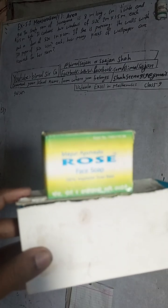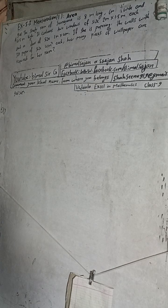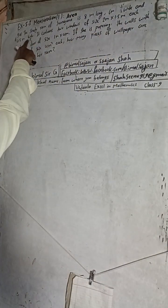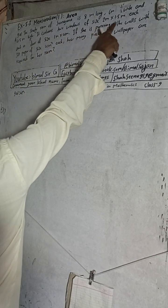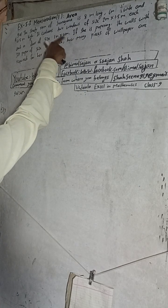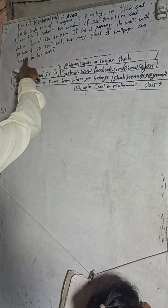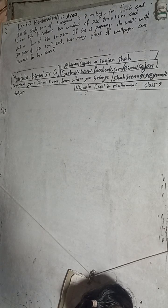The question is: The study room of Sunayana is 8 meter long, 6 meter wide and 4.5 meter high. It contains two windows of size 2 meter into 1.5 meter each and a door of size 1 meter into 4 meter. If she is preparing the walls with 3D paper of size 4 meter square, how many pieces of white paper are required for her room?